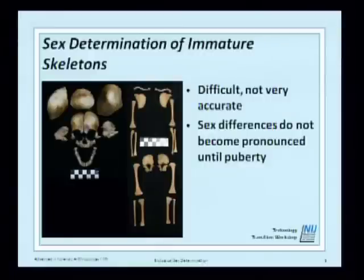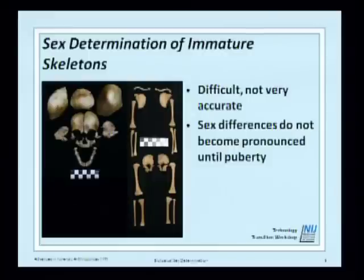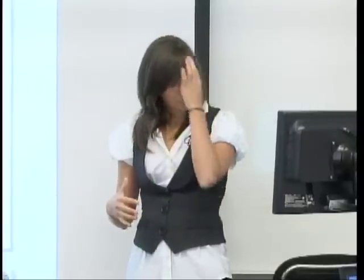When it comes to determining sex from juvenile skeletons, it can be very difficult. There are methods to use, but sometimes they are no better than chance, and you don't want to go to court with that. It's a realm we sometimes stay away from. For juveniles, you can't quite use 3D ID the way Dr. Ross mentioned for determining ancestry.